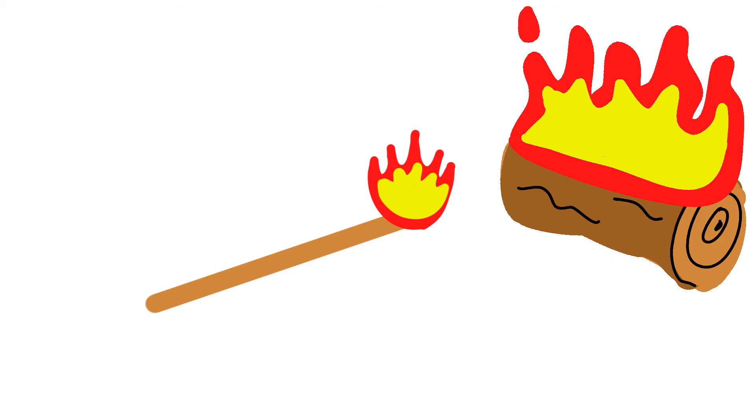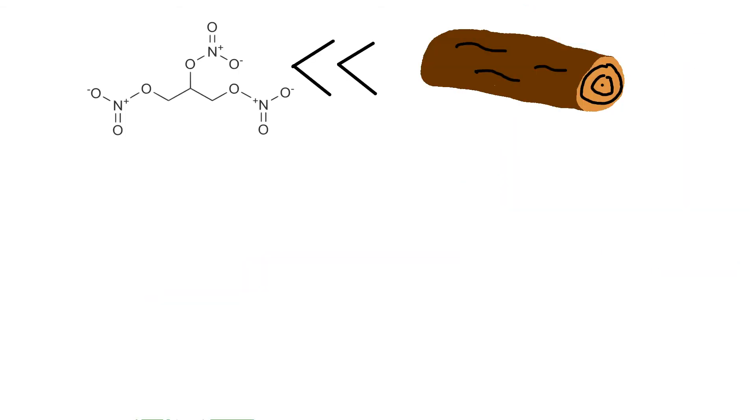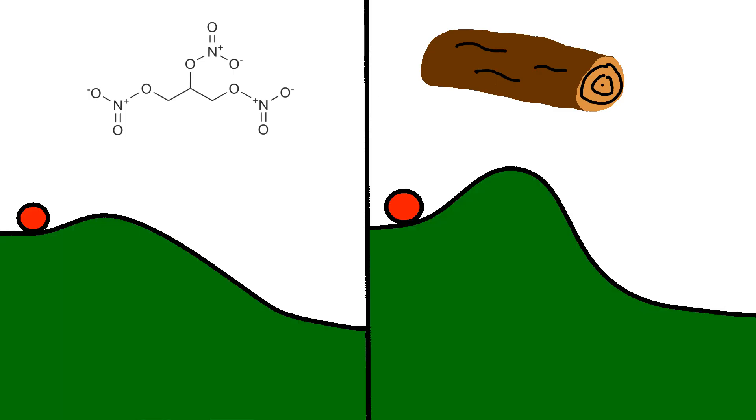This idea of activation energy is also why some chemicals, like nitroglycerin, will explode given the slightest provocation. Their activation energy is much, much lower than that of a log or even other explosives. So in our analogy with the ball, this bump is much, much smaller in the case of nitroglycerin than, say, wood or coal, and any kind of nudge will send it cascading down the hill.